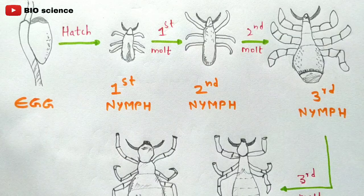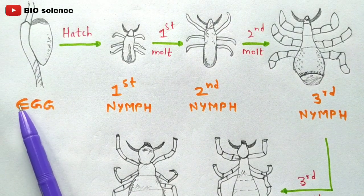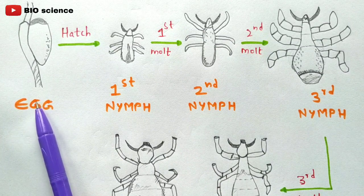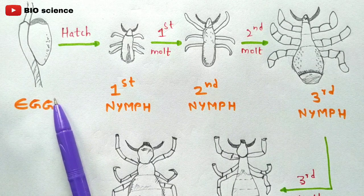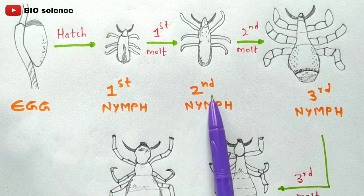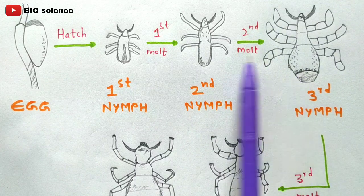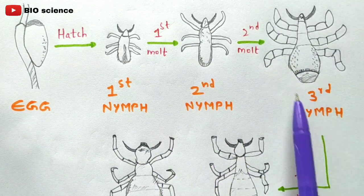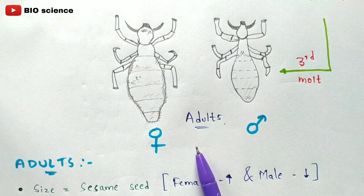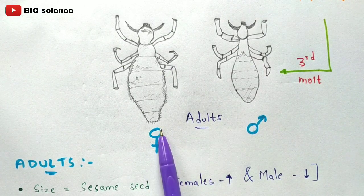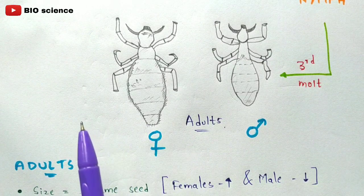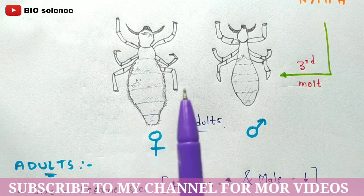Looking at the diagrammatic form: the egg undergoes hatching after one week, releasing the first nymph. The first nymph undergoes first molting to form the second nymph, which undergoes second molting to form the third nymph — with size increasing at each stage. The third nymph undergoes third molting to form the adults, which include male and female individuals.